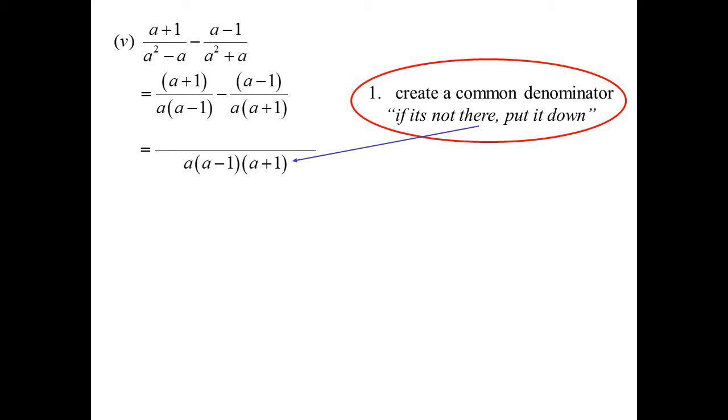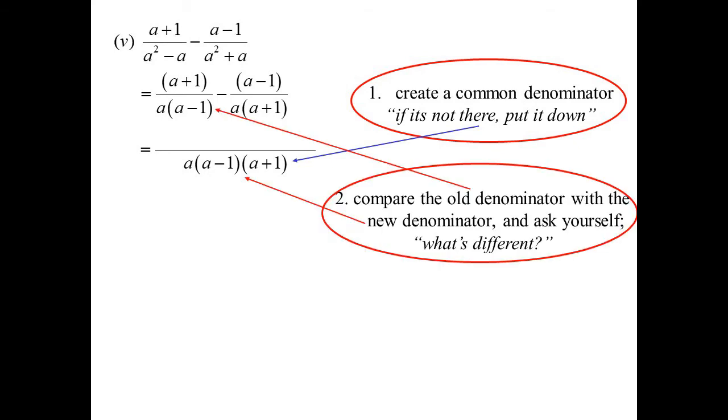a. Oh, it's already there. Don't need to worry about it. a plus 1. It's not there. I'll put it down. That becomes my common denominator. So how to work out the new numerators? I look at it now and say, well, what's different? So compare. Well, the denominator was a, a minus 1.